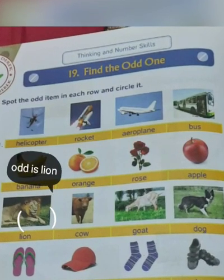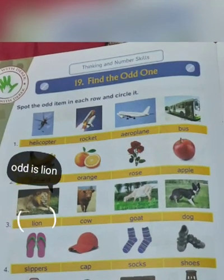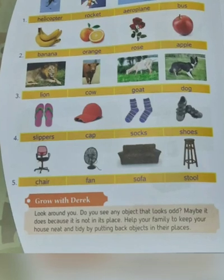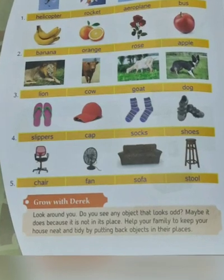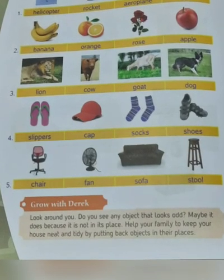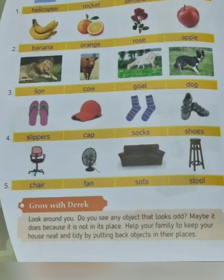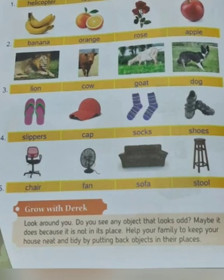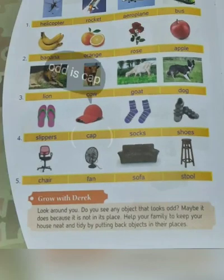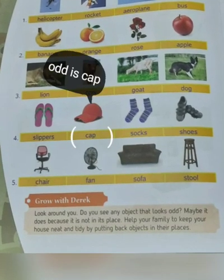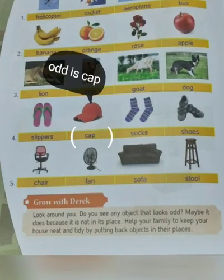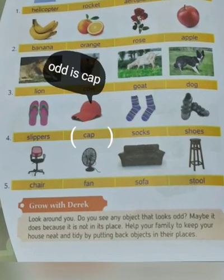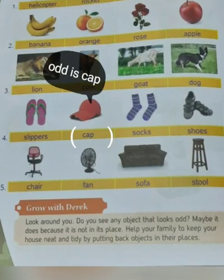Number 4: slippers, cap, socks, shoes. All the things except cap we wear on the foot — slippers, socks, shoes. But cap we wear on the head. So cap is the odd one. Circle it.